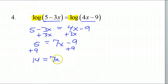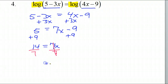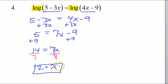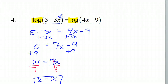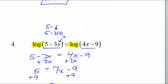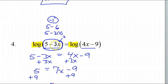Divide both sides by 7, and that's going to leave x equals 2. Now let's check and make sure this does not give any negative answers. If I plug 2 back in: 5 minus 3 times 2 gives 5 minus 6, which is negative 1. We cannot have a negative number inside of a log — you can't take the log of negative 1.